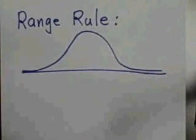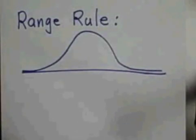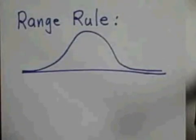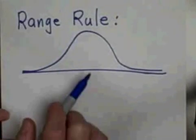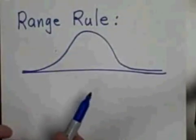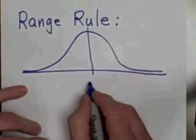Let's see what the range rule has to say about my mowing. The range rule talks about which values in a set of data are unusually large or unusually small. It's based on the standard deviation, and this is for most data sets, not just for normal distributions, but it definitely does apply for normal distributions. Let's say I've got a normal distribution of lengths of blades of grass from my mower, and I know the mean.